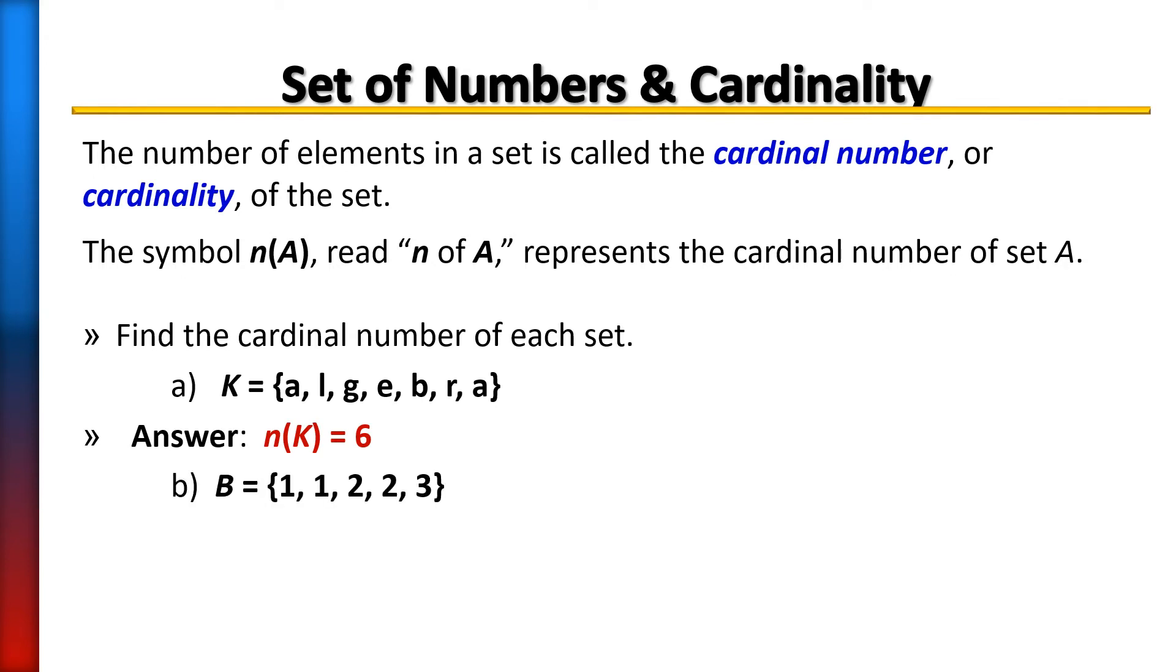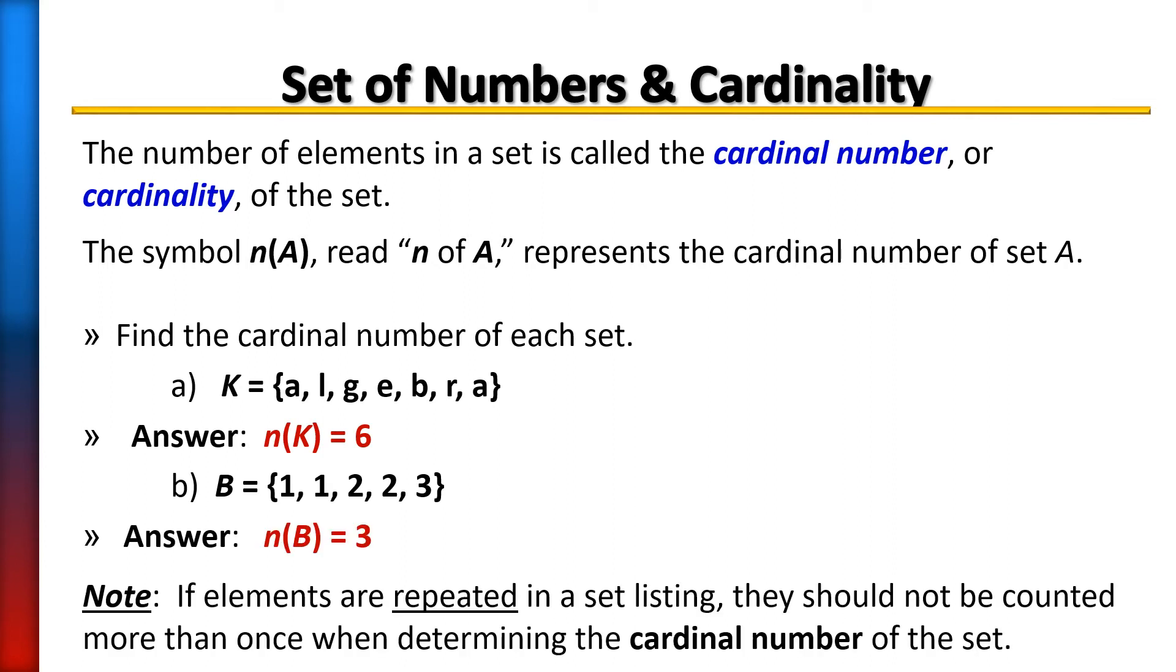Next we have set B which contains 1, 1, 2, 2, and 3. So to find the cardinal number of that set, I would need to find what is n of B. And what would you say n of B is? If you said three, that is correct. There are only three members in that set.